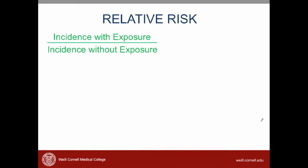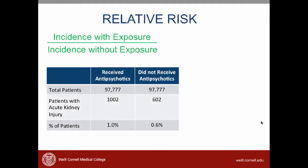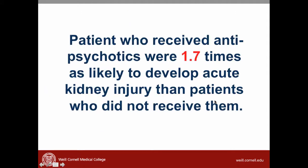Let's review a few terms from the session about therapy that apply to articles about harm. The first term is relative risk, which is the ratio of the risk in the exposed group to the risk in the unexposed group. Looking at our data, 1% of patients in the exposure group had kidney injury and 0.6% in the non-exposed group had kidney injury. The relative risk is simply 1 over 0.6, or 1.7. In real-life language, patients who received an antipsychotic were 1.7 times as likely to develop acute kidney injury than patients who did not receive them.